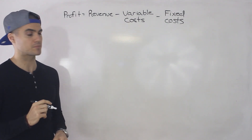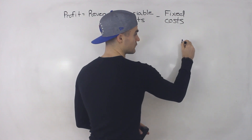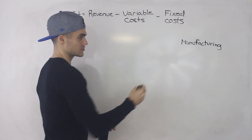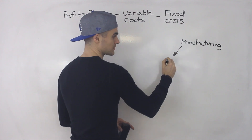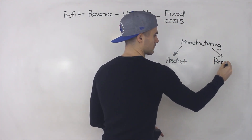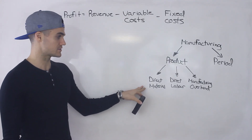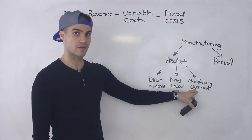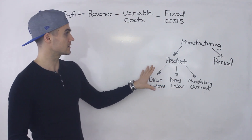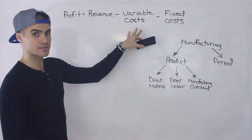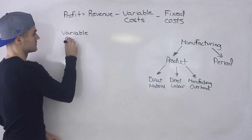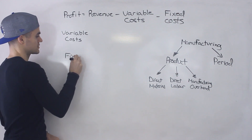Now, what if we get more specific and look at particular types of companies? For example, let's look at a manufacturing company. Manufacturing companies have two types of costs: product costs (or manufacturing costs) and period costs (or non-manufacturing costs). Product costs are further broken down into three pieces: direct material, direct labor, and manufacturing overhead. Let's take these specific manufacturing costs and categorize them as either variable or fixed.